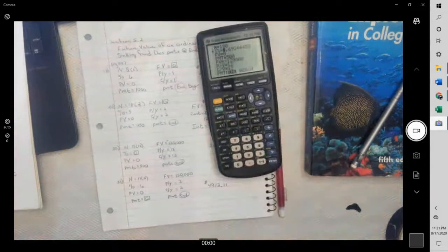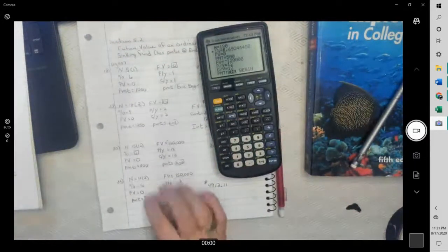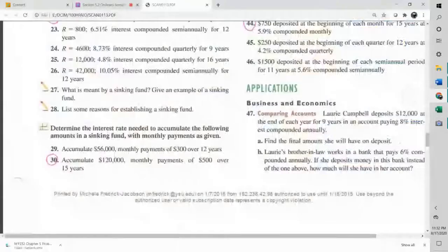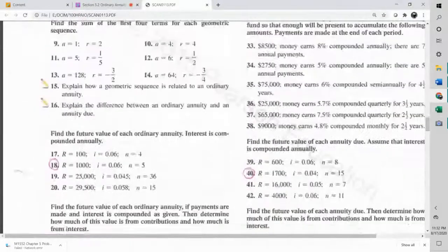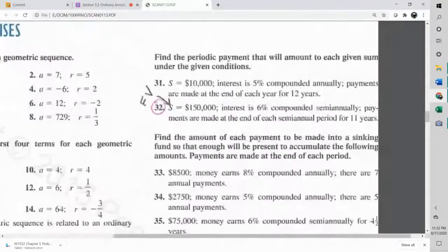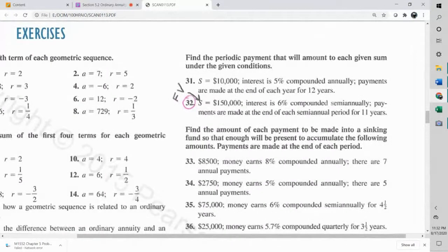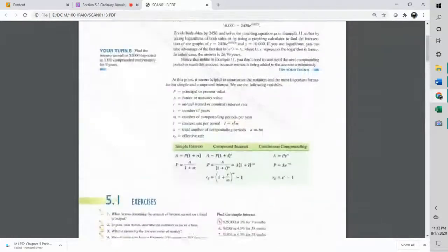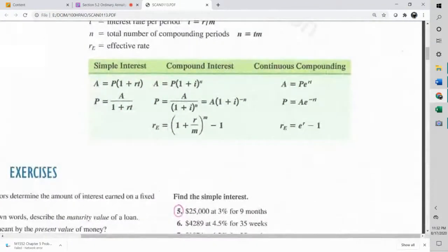One more. This one, we're looking for the payment. So let's look at number 32. S stands for future value in some of the things in the calculator. There's a lot of formulas we're omitting by using the calculator. So if you don't want to use the calculator.